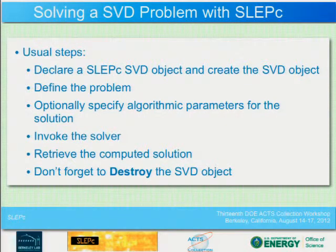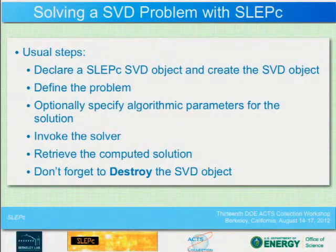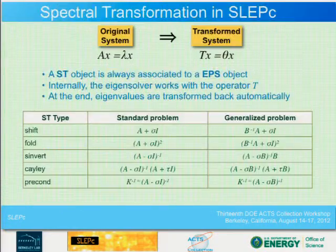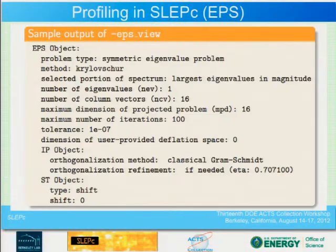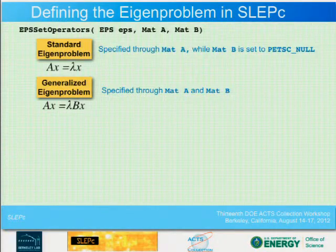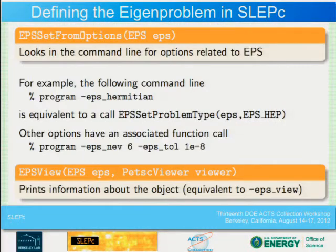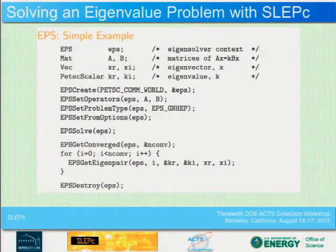Question: can you get error bounds on the computed eigenvalues? Yes, you can get them. You get a residual vector back, and you can ask for that information.